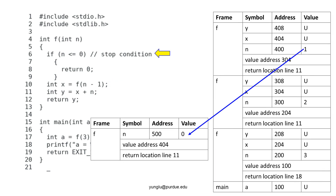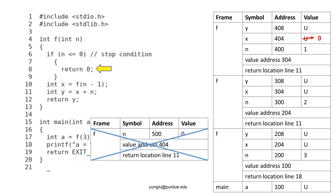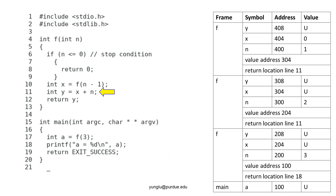The argument is n minus 1 and it is 0. As usual, we have to write the value address and return location in the top frame. Please pay attention to the value address and the return location. The stop condition is met and the function returns 0. The value is written to the address 404. Then, the top frame of the stack memory is popped. The program continues from line 11.